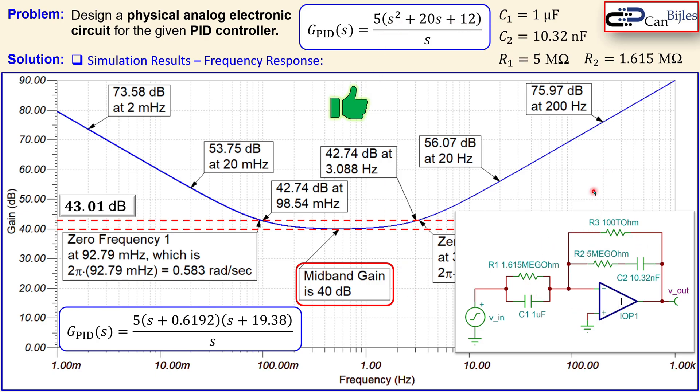This is our third example about PID controller realization using physical analog electronic components. We have seen how to determine component values for an op-amp circuit with resistors and capacitors, and verified the design in SPICE simulations. If you have any questions about this example, please let me know and I will answer as soon as possible. See you next time.